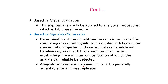A signal-to-noise ratio of 3:1 to 2:1 is generally acceptable for all three replicates. Different solutions of analyte are prepared at low concentrations and injected to generate the chromatogram, and the concentration at which a signal-to-noise ratio of 3:1 or 2:1 is obtained is considered as the DL concentration.